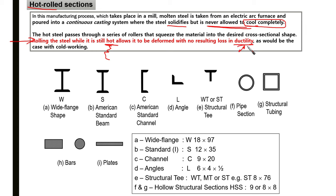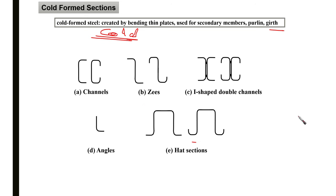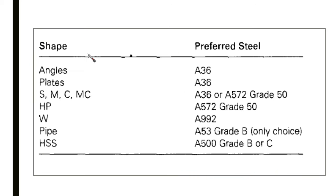This is the main advantage of hot rolling compared to cold forming. Cold-formed steel is created by bending thin plates of cold (not hot) steel and is used for secondary members such as purlins and girts. Common cold-formed shapes include channels, I-shapes, double channels, angles, and hat sections. Cold-formed sections are not the main focus of our course.